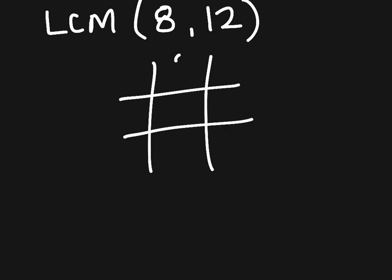Create your grid and enter your numbers just like you did for the GCF: 8 and 12. I'm looking for common factors of 8 and 12. I know that a common factor is 2, and that 2 times 4 is 8 and 2 times 6 is 12.